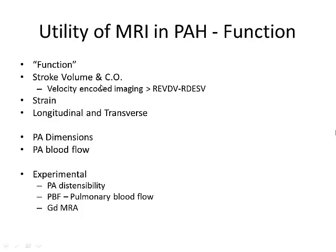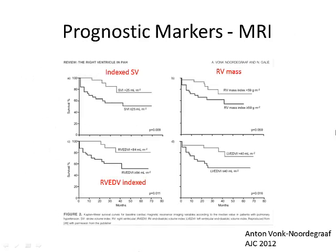In terms of function, you can calculate stroke volume and cardiac output from RV end-diastolic and systolic volumes, or use velocity-encoded imaging for direct forward flow, which is probably more important physiologically. You can calculate strain both longitudinal and transverse, PA dimensions, pulmonary arterial blood flow via velocity-encoded imaging, and PA distensibility. Gadolinium enhancement enables magnetic resonance angiography to look for the classic pruning pattern. Prognostic markers include indexed stroke volume, RV mass, and both right and left end-diastolic volumes.